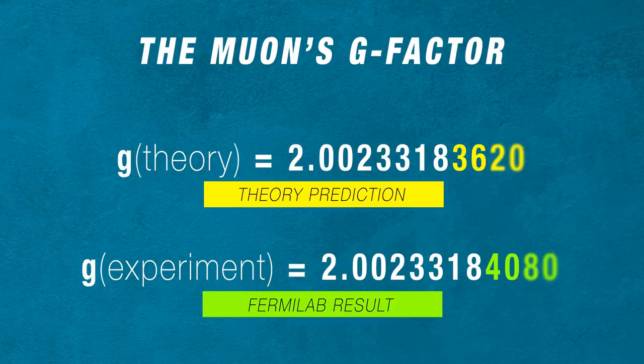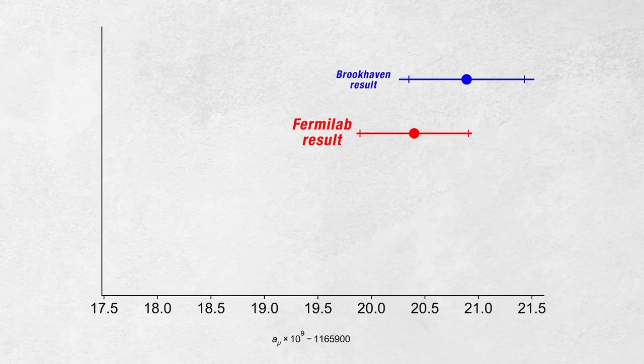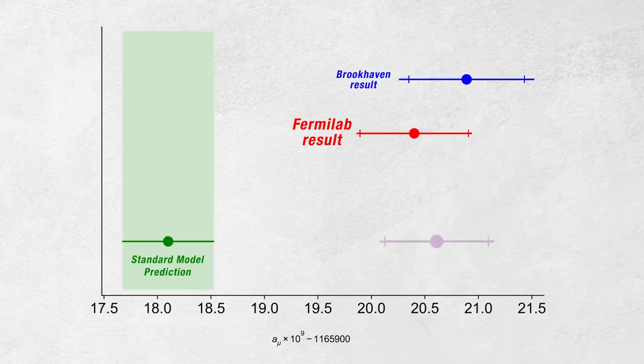The new result does not agree with the standard model prediction, but it does agree with the previous experiment published almost 20 years ago. You can see the standard model on the left side and you see the new average of the experiments on the right side. There's a big gap of white space between them.